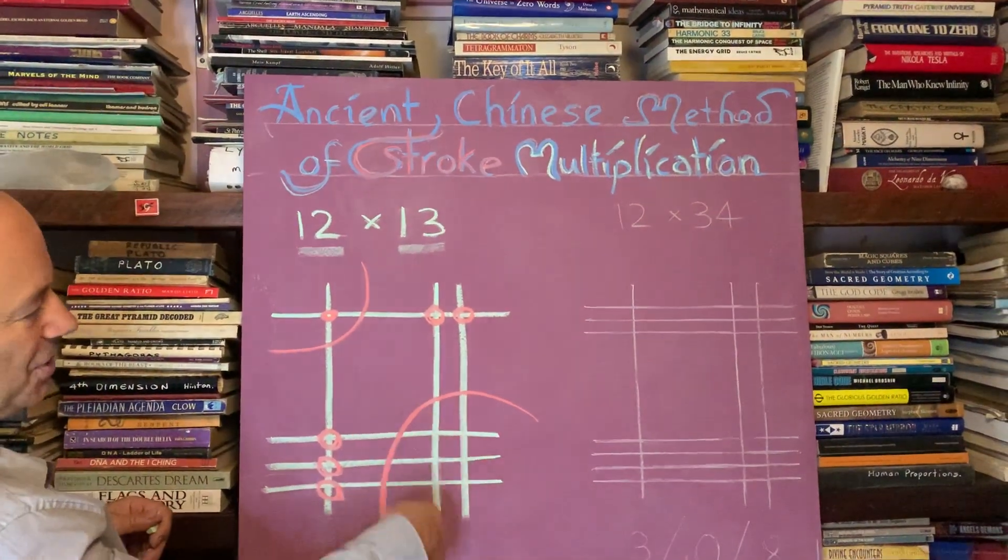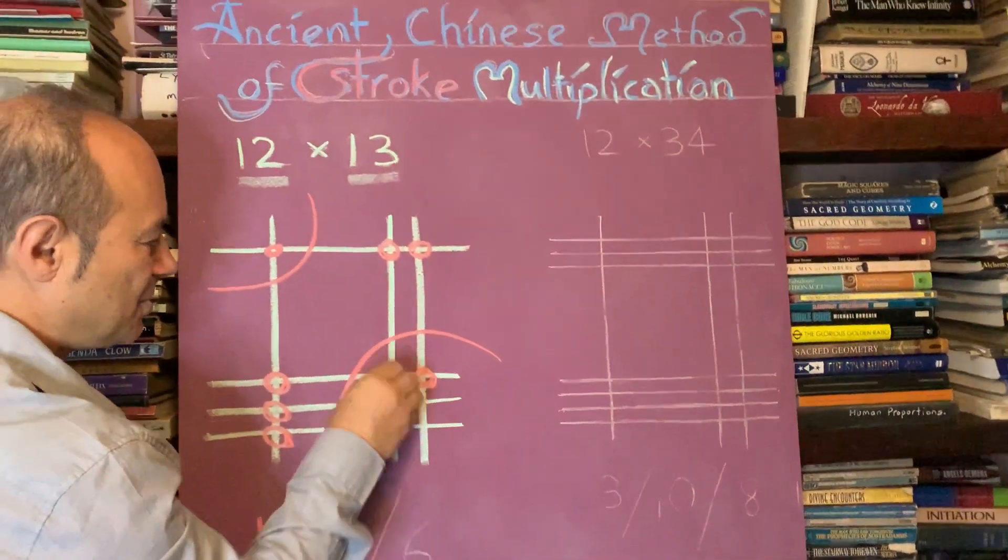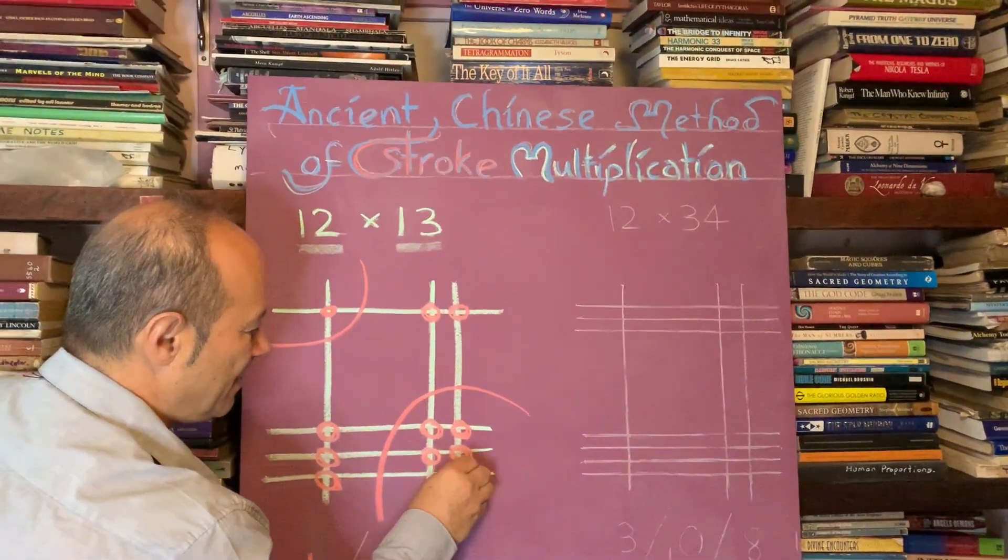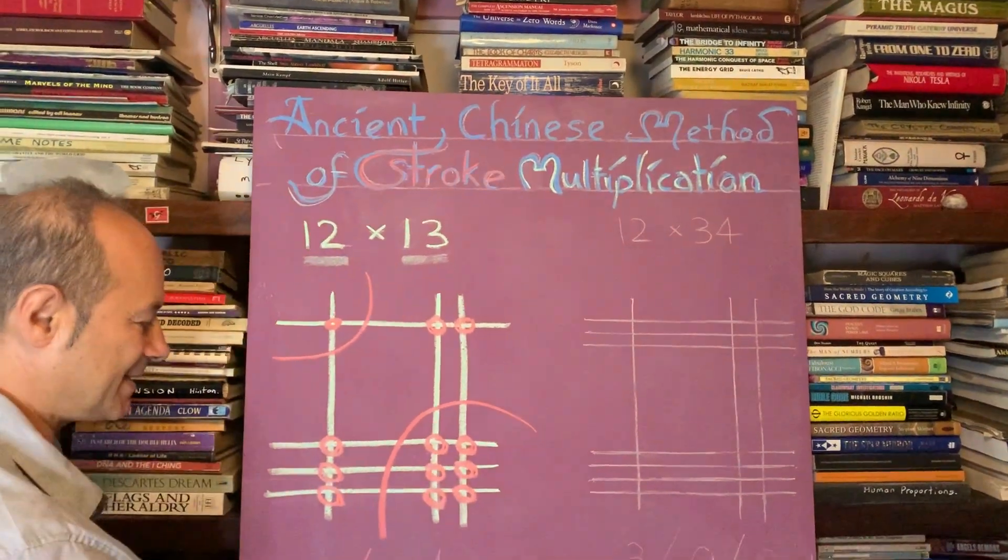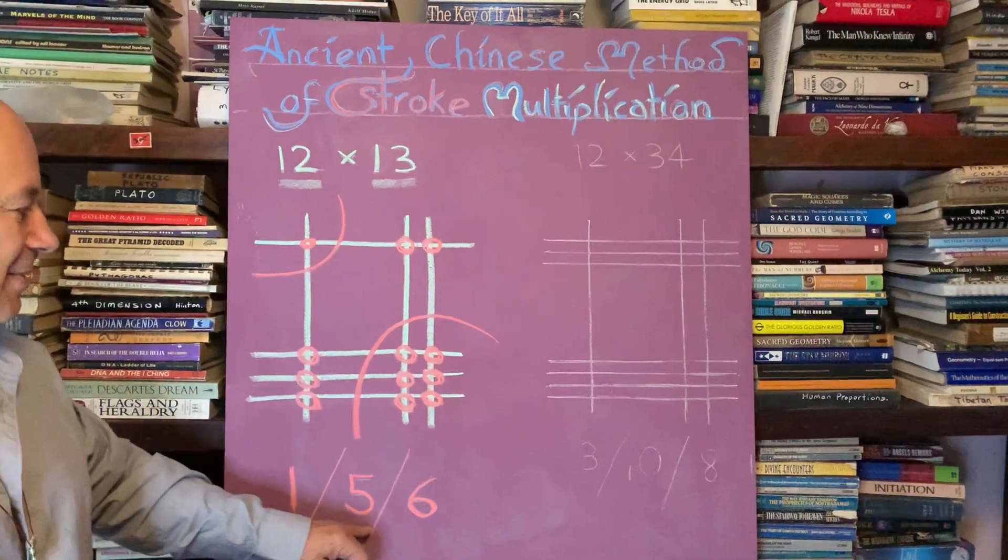And for the units, these are the unit points here. We've got one, two, three, four, five, six. So the answer is 156.